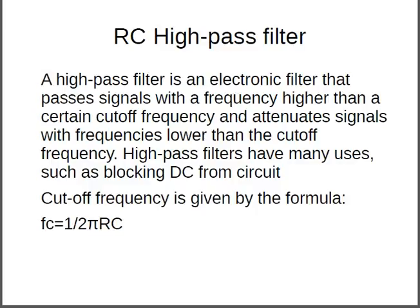RC high-pass filter. A high-pass filter is an electronic filter that passes signals with a frequency higher than a certain cut-off frequency and attenuates signals with frequencies lower than the cut-off frequency. High-pass filters have many uses, such as blocking DC from a circuit. The cut-off frequency is given by the formula: FC = 1 / (2πRC).